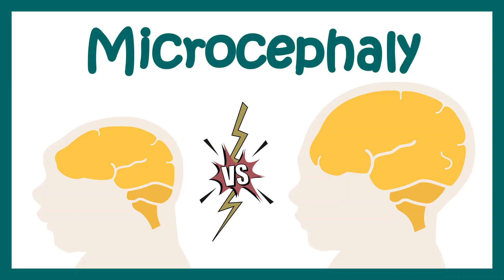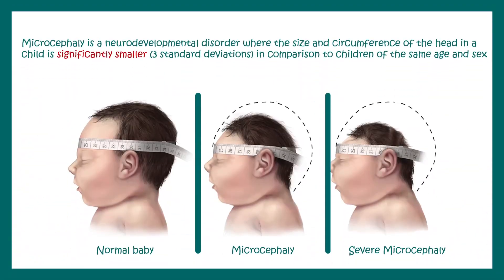In this video, we are going to talk about microcephaly. Microcephaly is a neurodevelopmental disorder where the size and circumference of the head of a child is significantly smaller in comparison to children of the same age and same sex. There could be microcephaly where the brain is smaller and the overall head circumference is three standard deviations apart compared to a normal baby, and there are cases of severe microcephaly.